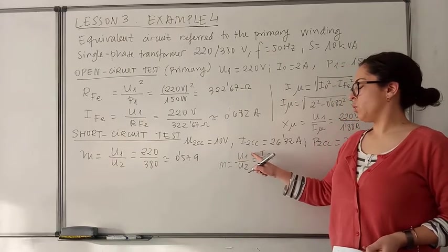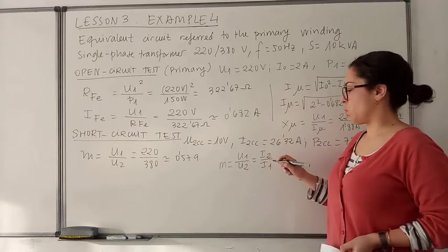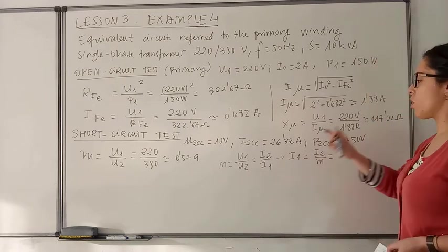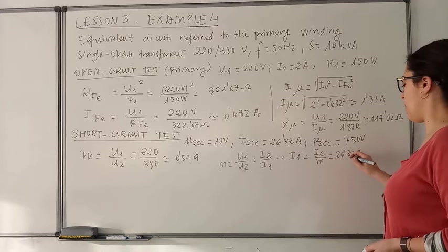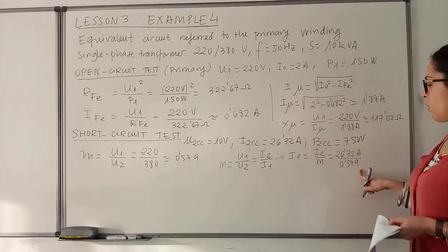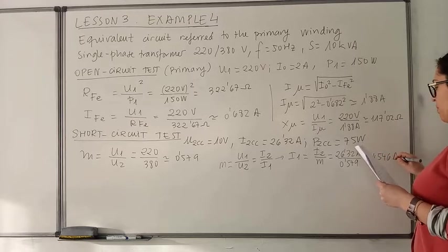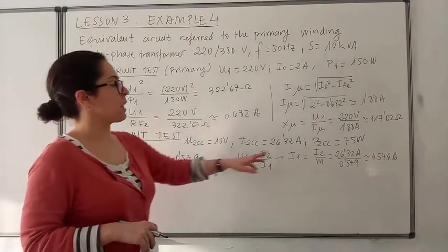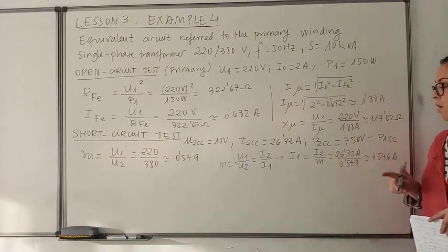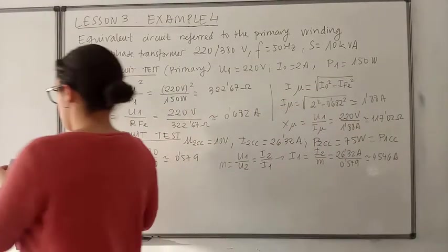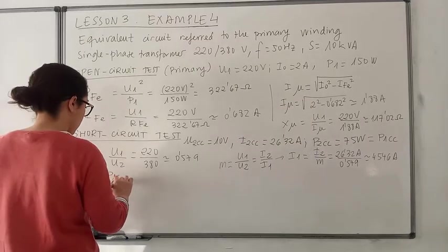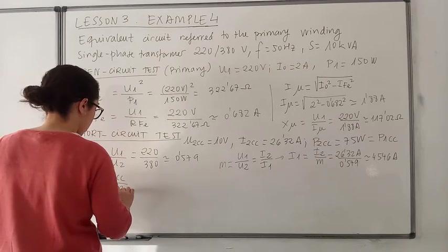The voltage ratio U1 divided by U2 equals current I2 divided by current I1, which means that current I1 will be current I2 divided by the transformation ratio. So if we measured a short circuit current of 26.32 A in the secondary winding, the value in the primary winding would be approximately 45.46 A. The power is constant in the primary and secondary winding, so the power measured in the short circuit test is the same for the primary winding. The short circuit resistance in the primary winding will be the short circuit power divided by the square of the short circuit current in the primary winding.